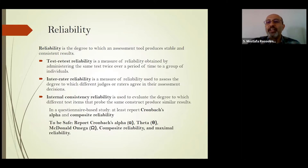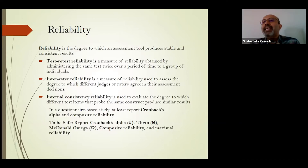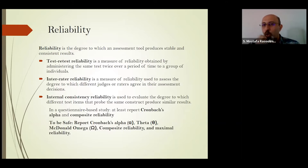Another method is inter-rater reliability, which is very common in social science. We ask different judges or raters to read our questionnaire and our items, and give their comments about understandability — the meaning of the items. So we ask some experts and raters to read our questions and check understandability.